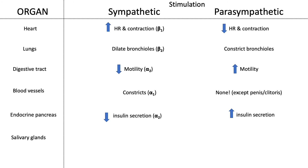Finally, the salivary glands: during a sympathetic response, salivation still occurs but produces a smaller volume of thick, mucus-rich saliva — causing dry mouth — via alpha-1 receptors. During a parasympathetic rest-and-digest response, the salivary glands produce large volumes of watery, enzyme-rich saliva to help break down starches.